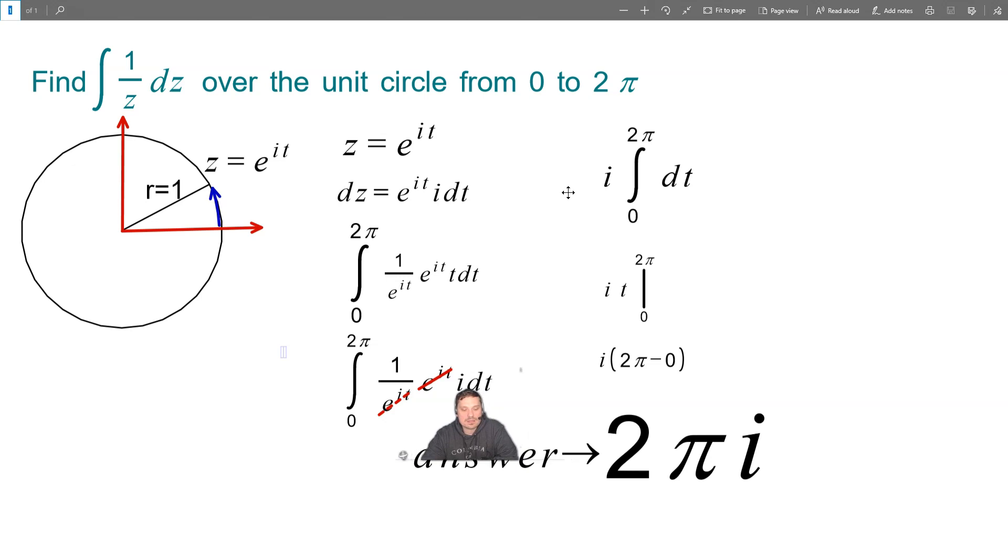Next, what I'm going to do is remember i in this context is the imaginary unit. It's a constant value. It doesn't change. So for that reason, up here what I can do is I can put the i outside the integral symbol and I will be left with 0 to 2 pi dt for that simple reason.